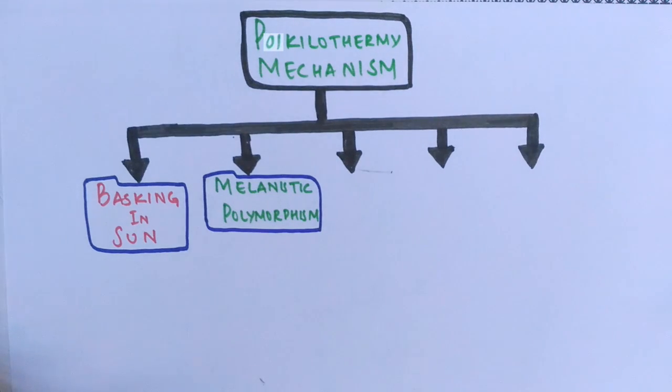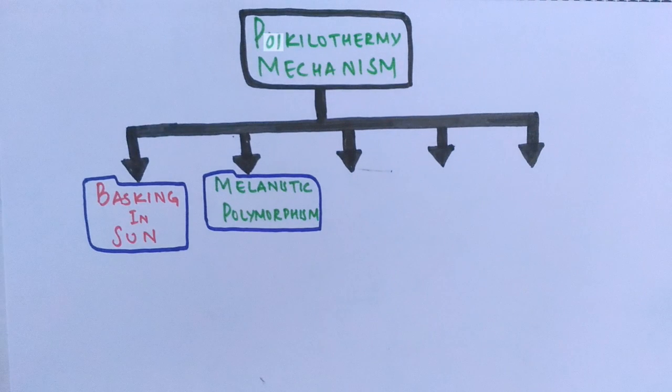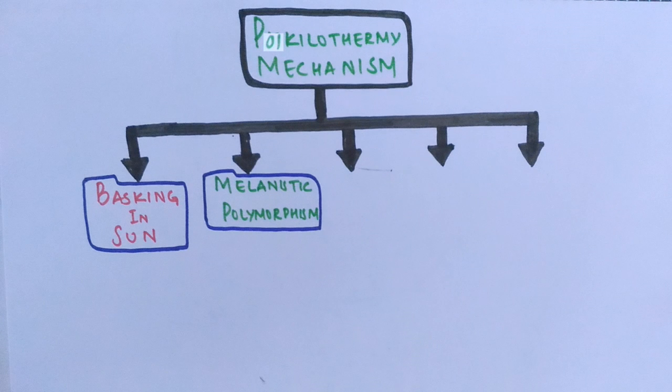In reptiles, the body color can have direct effects on numerous aspects of their existence such as thermoregulation or prey-predator interactions. Darker melanic individuals show lower skin reflectance and consequently heat up more rapidly and maintain optimal body temperature more easily than lighter colored individuals.